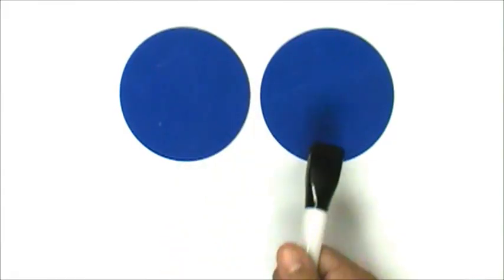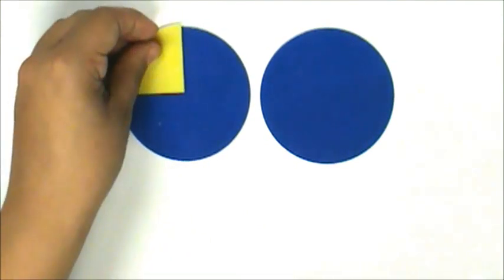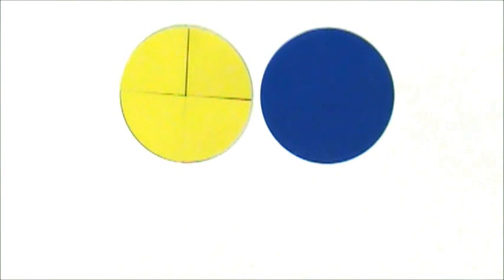Each circle represents one whole. Let's partition the first circle into fourths. Let's represent the fraction two-fourths with the yellow fraction circles.